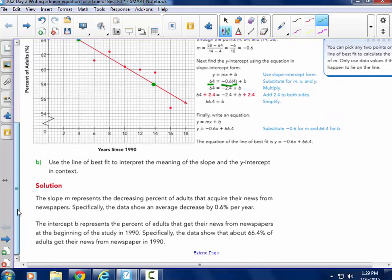Use the line of best fit to interpret the meaning of the slope and the y-intercept in context. So the slope represents the decreasing percent of adults that acquire their news from newspapers. We know people aren't reading the paper very much anymore. Specifically, the data shows an average decrease of 0.6% per year.